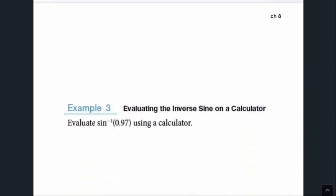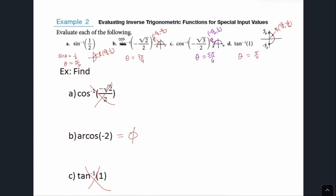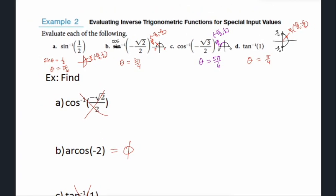Knowing your unit circle is the main key for this section. You could even say that the cosine of theta will never equal negative 2 — that helps your brain. Make sure you know your unit circle.